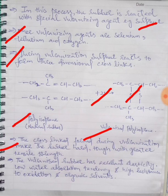The crosslinks formed during vulcanization make the rubber hard and tough with greater tensile strength. The vulcanized rubber has excellent elasticity, low water absorption tendency, and high resistance to oxidation and organic solvents.